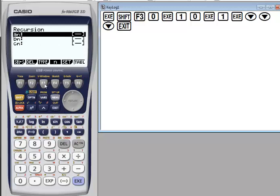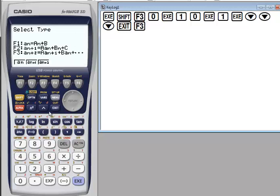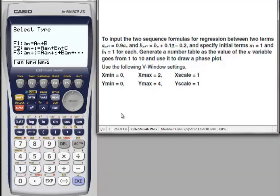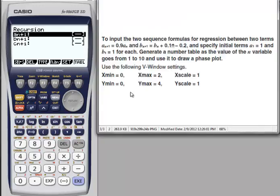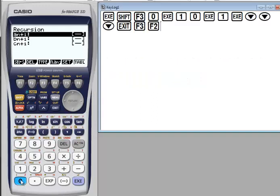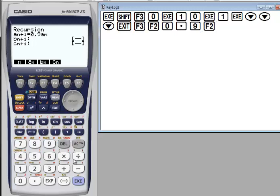Press F3 to choose the type of the formula. The type of the formula is a sub n plus 1. A sub n plus 1 equals 0.9 A sub n. F2, execute.